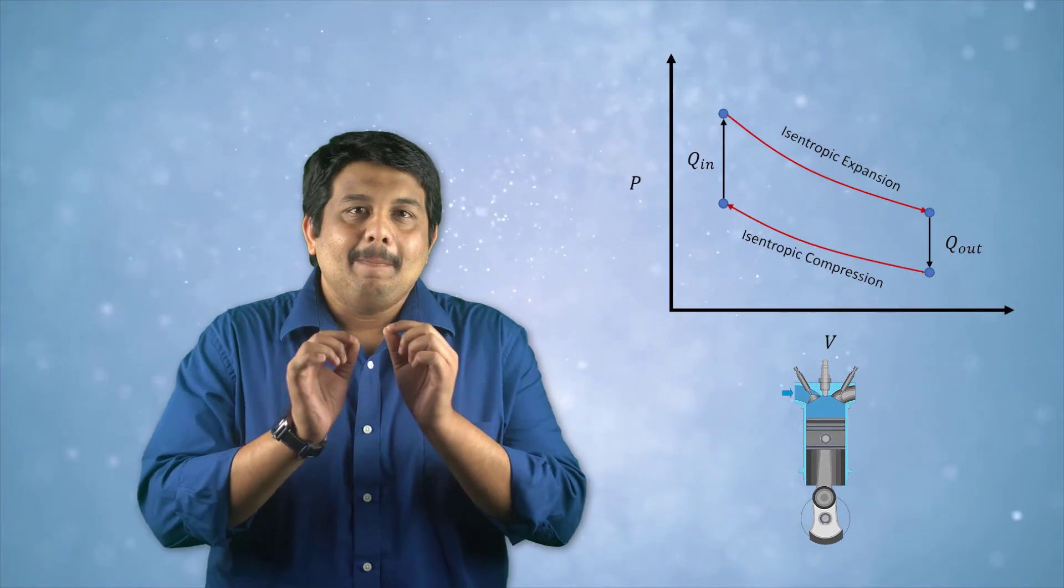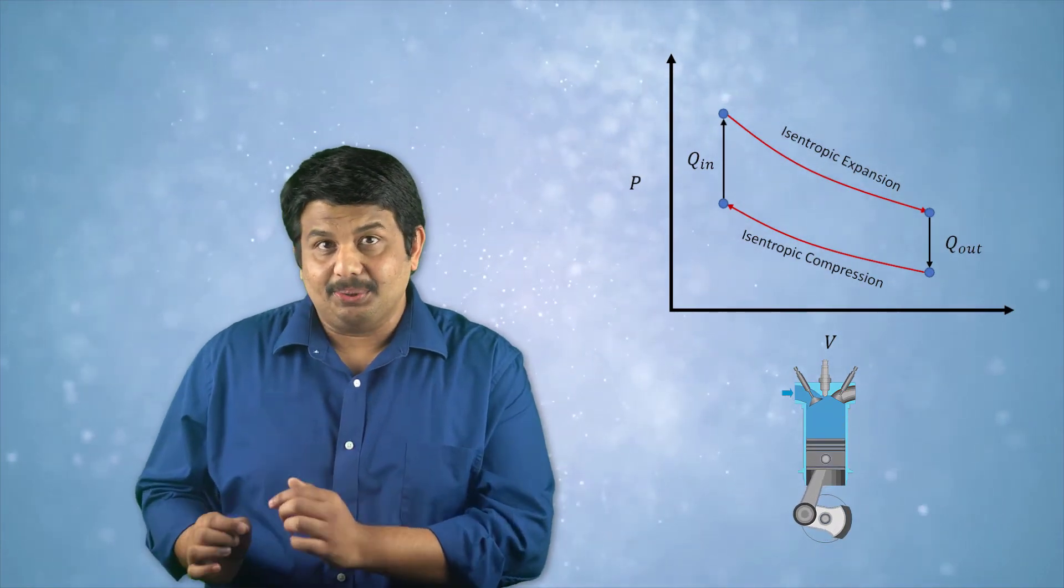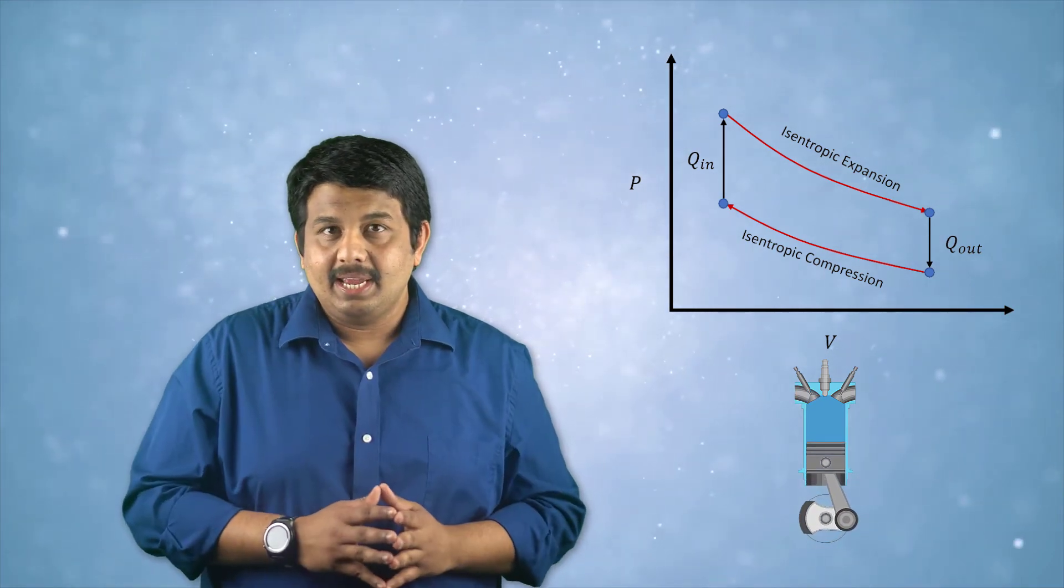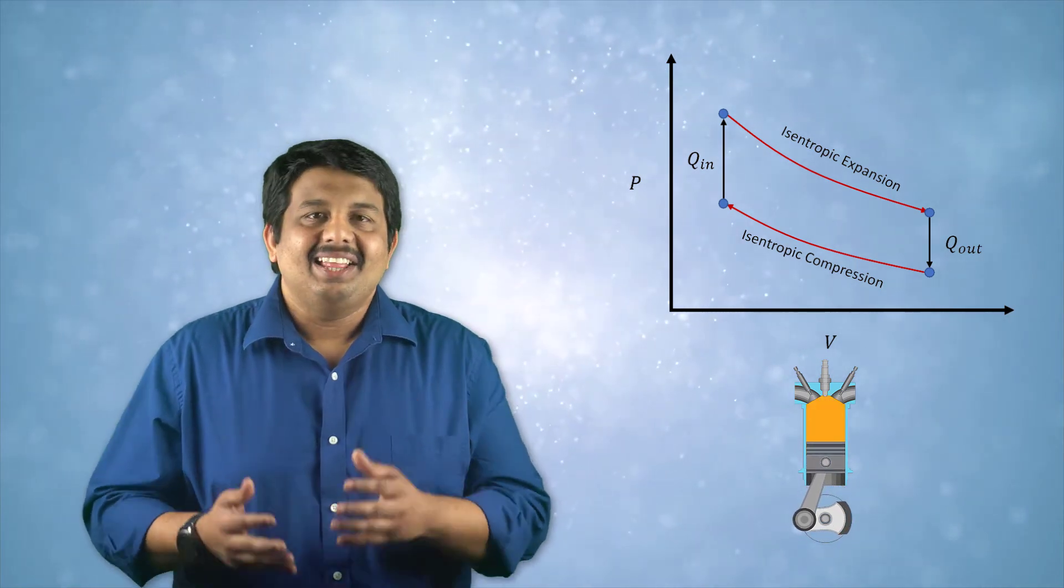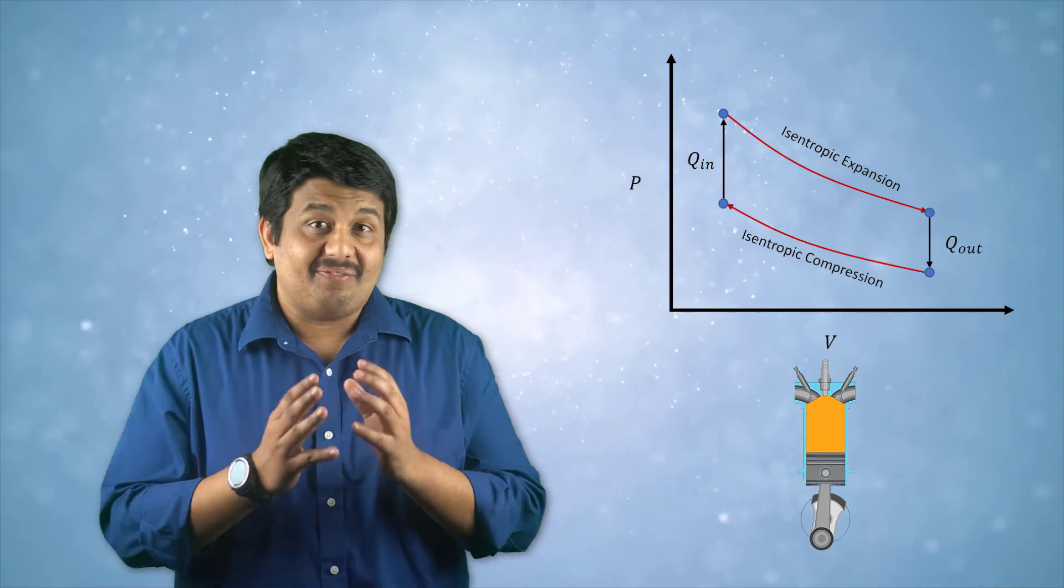For example, in the real world, the compression and expansion processes of an internal combustion engine can be assumed to be isentropic. Based on the compression ratio that is enforced by the design of the piston-cylinder assembly and on the initial temperature of the gas mixture, the final temperature of the gas can be calculated using these isentropic relations. With that, let's wrap up this lesson.